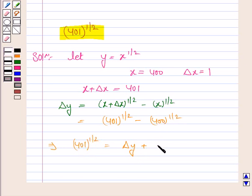Now 400 can be written as 20 to the power 2. And its power 1 by 2. Now 2 gets cancelled with 2 and we have delta y plus 20.